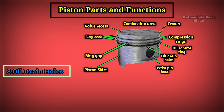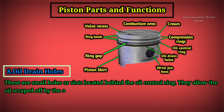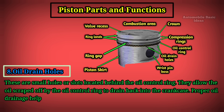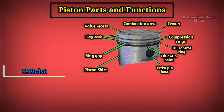Oil Drain Holes: These are small holes or slots located behind the oil control ring. They allow the oil scraped off by the oil control ring to drain back into the crankcase. Proper oil drainage helps in maintaining the right oil levels and lubrication within the engine.